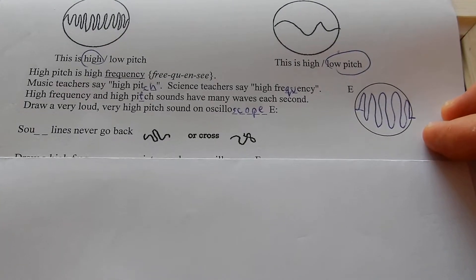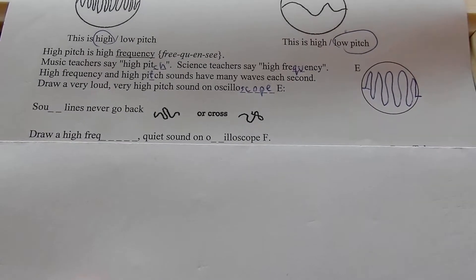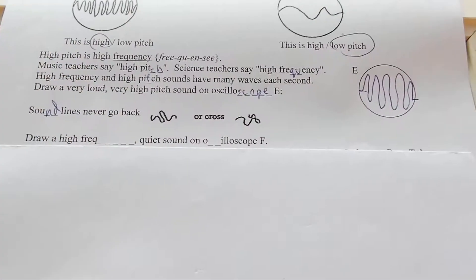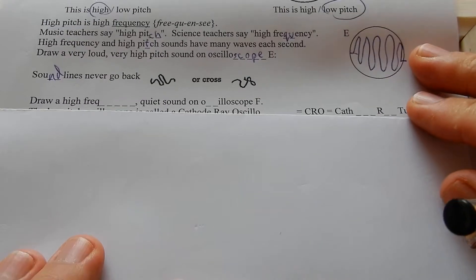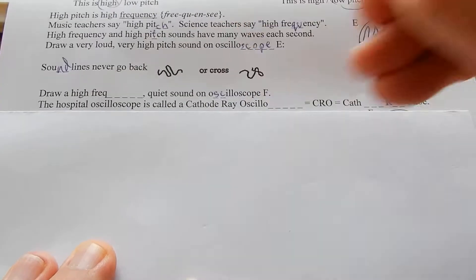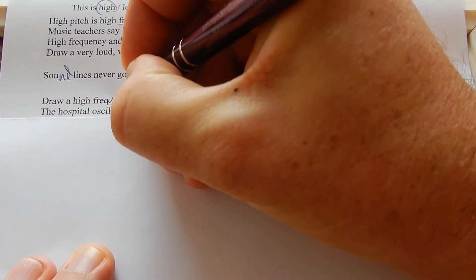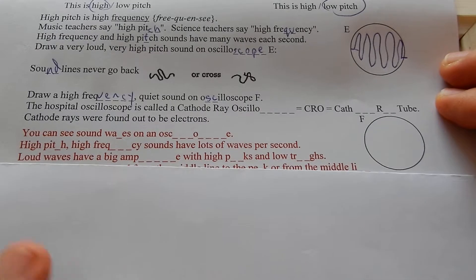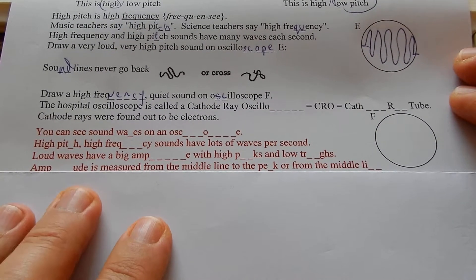Sound lines never go back or cross. Draw a high frequency quiet sound on oscilloscope F. It's gonna be high frequency quiet.